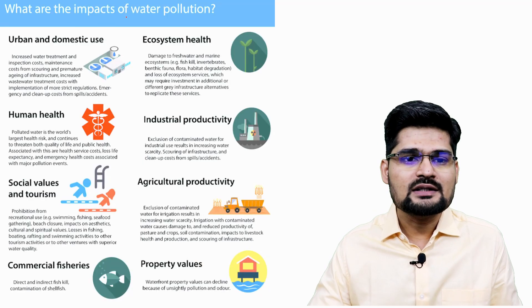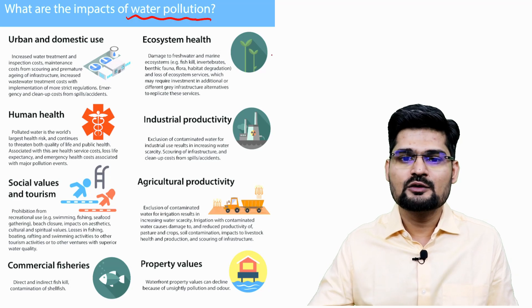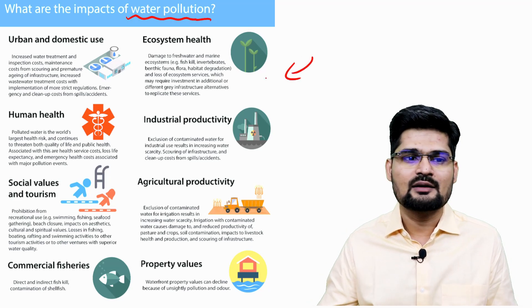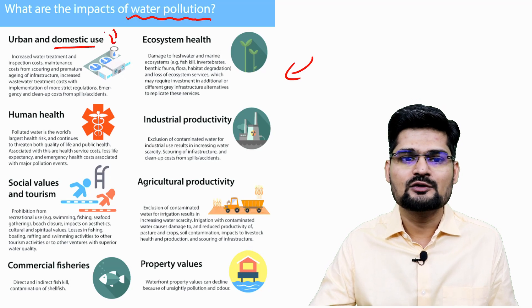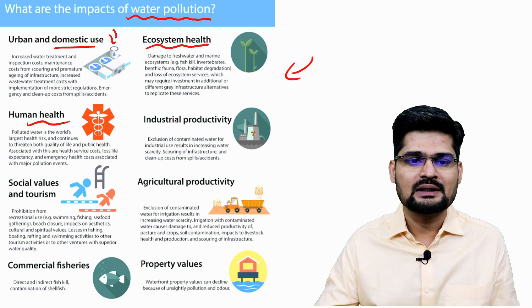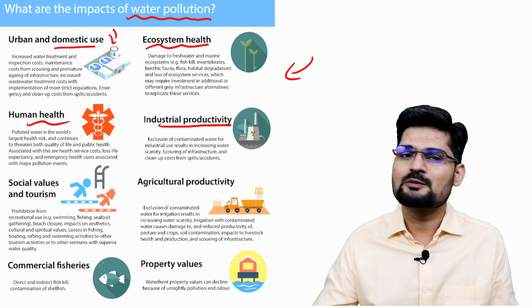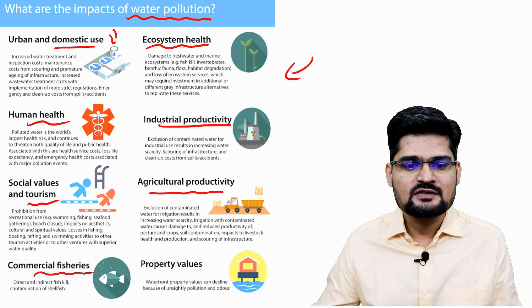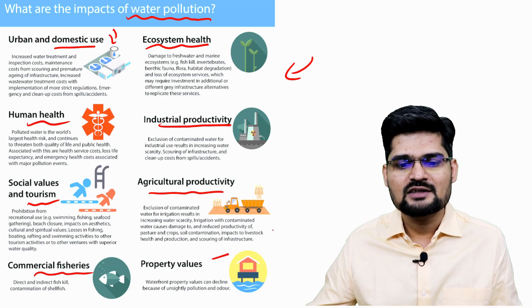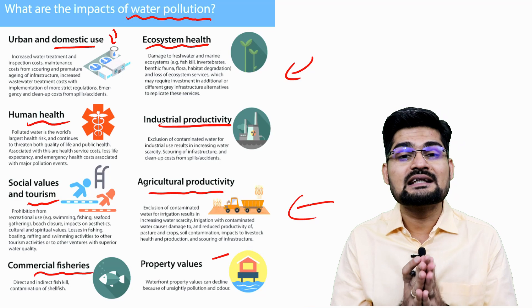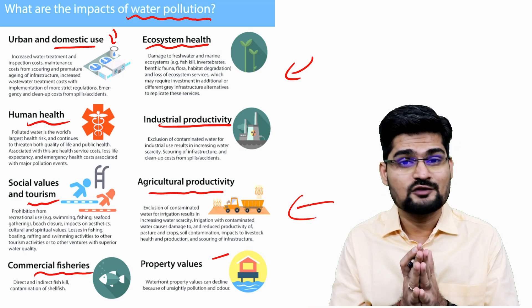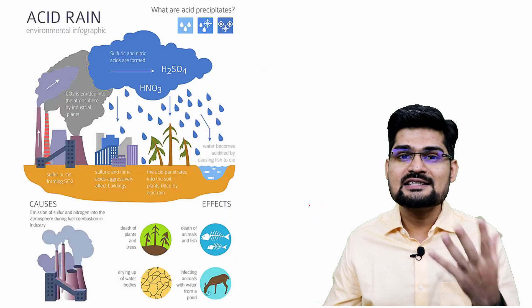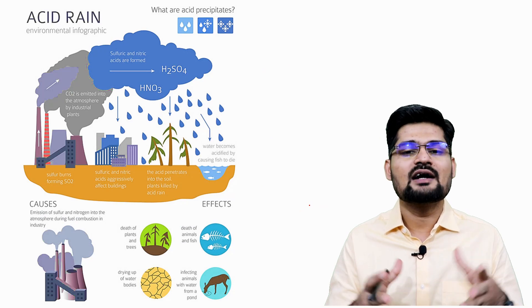Looking at impacts of water pollution through flow diagrams and infographics: urban and domestic usage creates pressure on ecosystem health, human health, industrial productivity, social values, tourism, agricultural productivity, commercial fisheries, and property values. All of them have a significant linkage to water pollution.